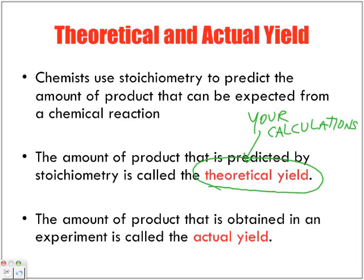The amount of product that is obtained in an experiment is called the actual yield, because not all of it will be. So what we're trying to figure out is based on what we're supposed to get with what we actually get, what percentage do we actually obtain?